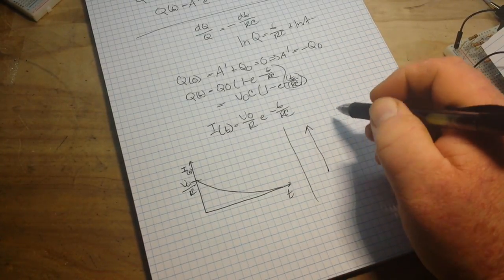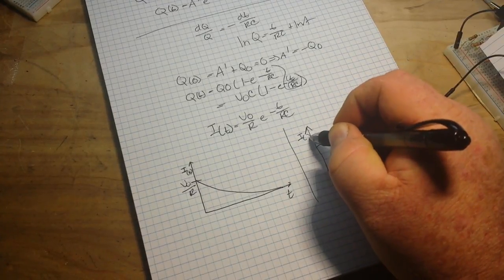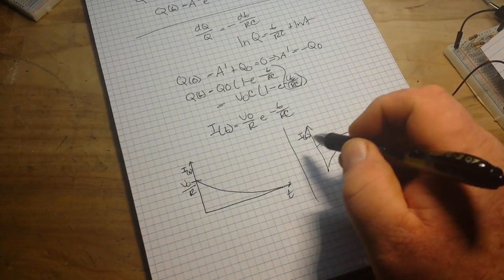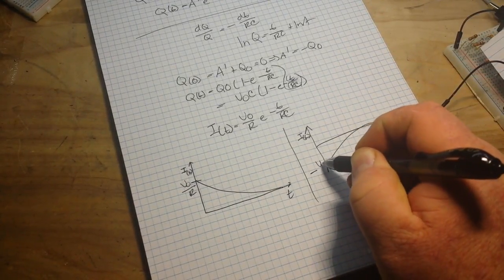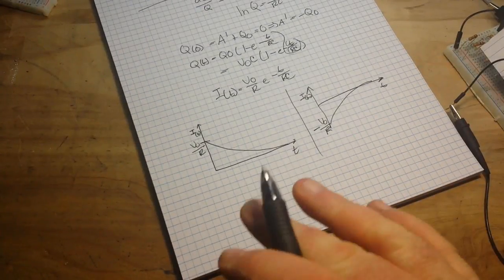Again, if we do it for our discharging capacitor, current at T, again this is T, looks more like this, and we have minus V zero over R.